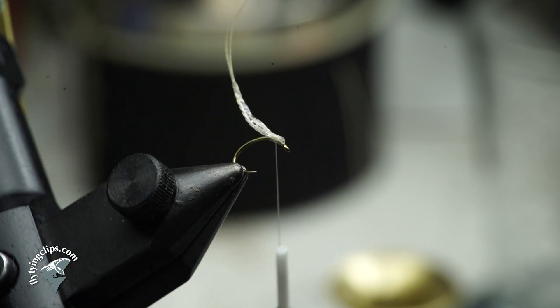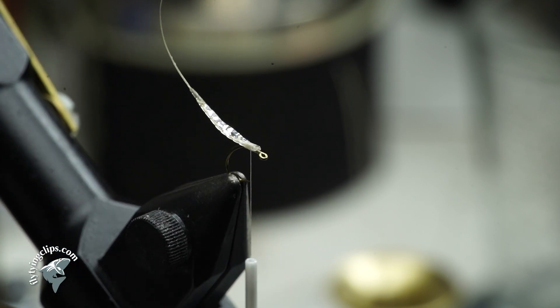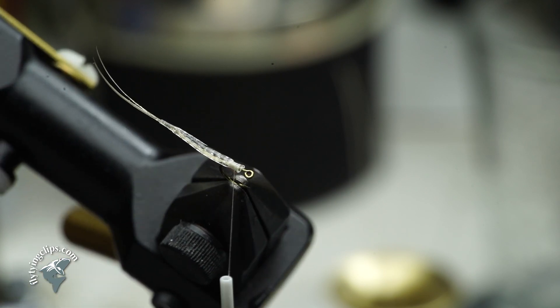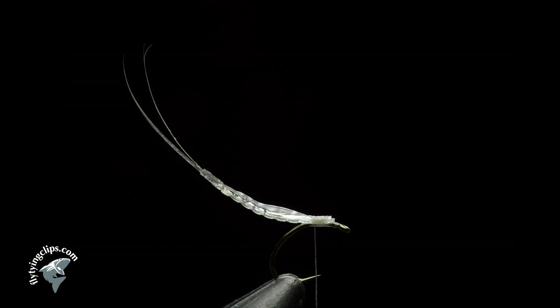Just give you a view of what that extended body tail looks like. And then you can just tie on the rest of your fly. You might do a parachute, whatever you care to use.